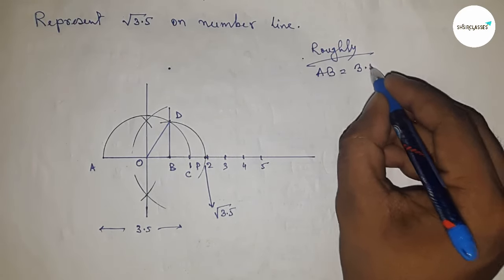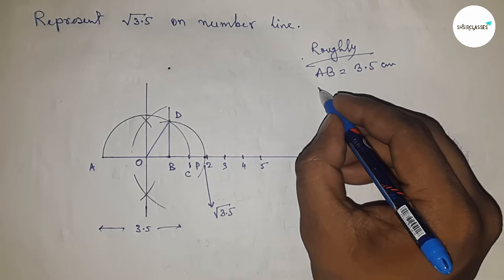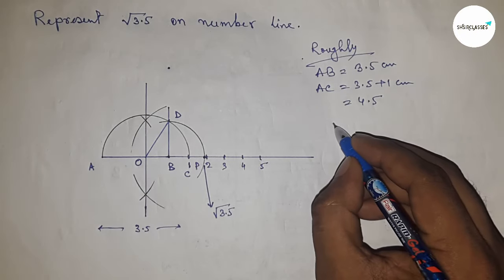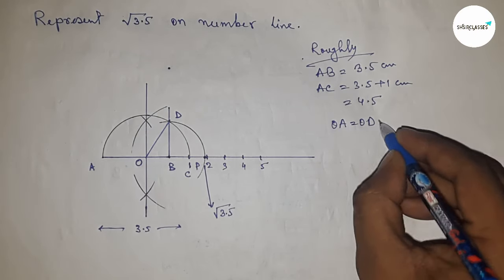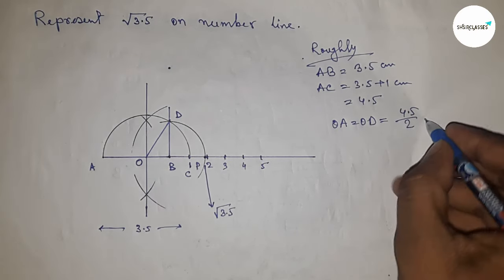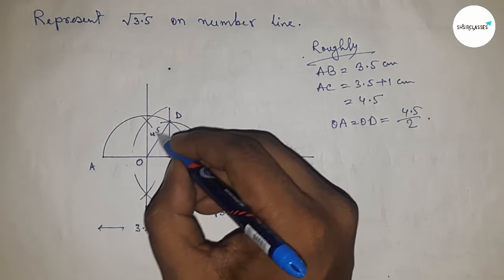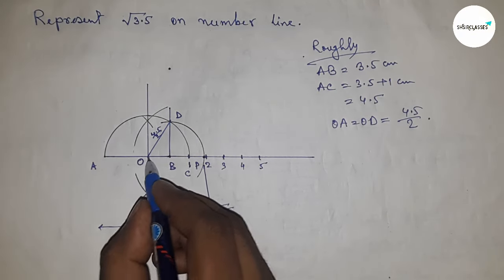Now roughly discussing the calculation. So AB equals 3.5 cm. AC equals 3.5 cm plus 1 cm equals 4.5 cm.